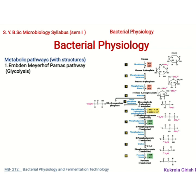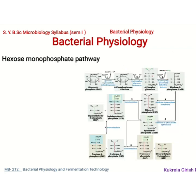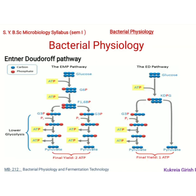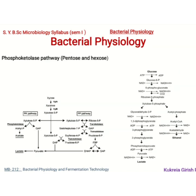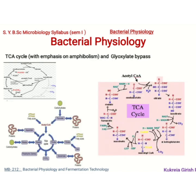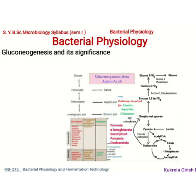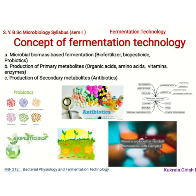To start with, we will have the Embden–Meyerhof–Parnas pathway, commonly called glycolysis. We will also cover the Hexose Monophosphate pathway, the ED pathway (Entner–Doudoroff pathway), the Phosphoketolase pathway (both Pentose and Hexose), and the TCA or Krebs cycle — also called the citric acid cycle — emphasizing its amphibolic nature and the glyoxylate bypass. We will also talk about gluconeogenesis — the synthesis of glucose — and the significance of this pathway.